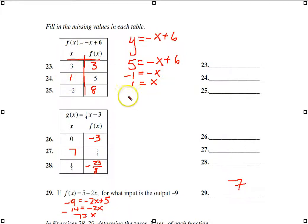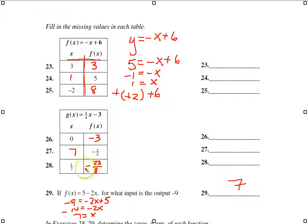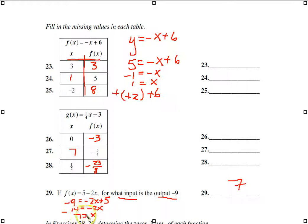For number 29, you had to find the input when the output is -9. The output is Y, so Y = -9. Rewriting the equation and solving for X: transpose the 5, divide both sides by -2, and X = 7. So your input is 7 and your output is -9.